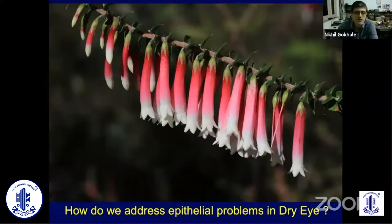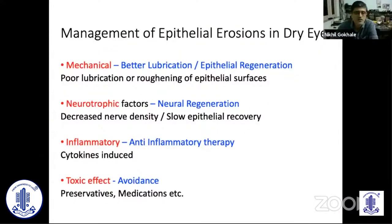If we need to address how we should treat epithelial problems, improve ocular surface stain scores, and improve patient symptomatology, we need to look at each mechanism and see how we could target it so that staining goes down and the patient feels better. If looking at mechanical pathology, use a better lubricant and something that helps epithelial regeneration for faster recovery. For neurotrophic factors, look at mechanisms to induce neural regeneration, and of course use anti-inflammatory therapy to target inflammatory cytokines on the ocular surface.